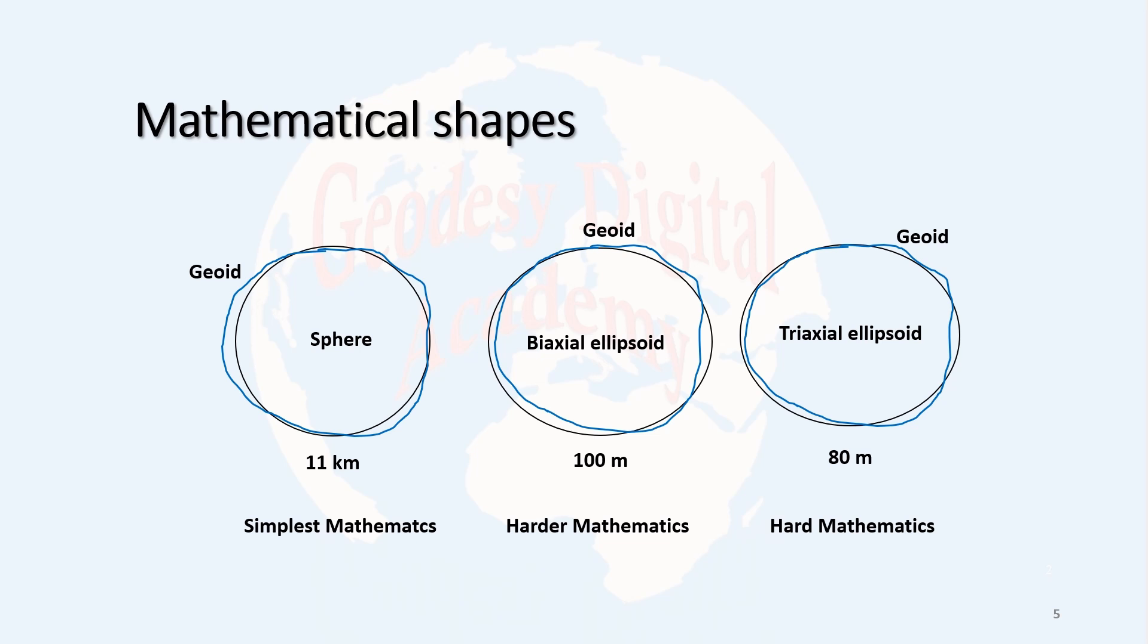Therefore, at first they started fitting a sphere to the geoid. In that case, they observed 11 kilometers difference between this sphere and the geoid, which is rather big. The discrepancy is a little large. The simplest mathematical model is the sphere because it can be defined only by one radius.